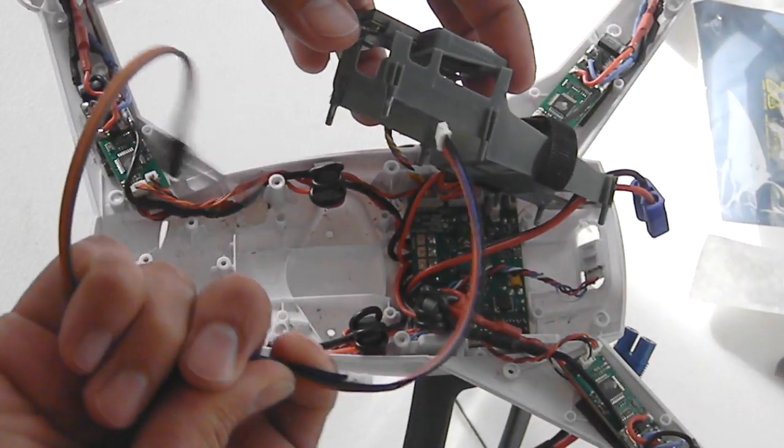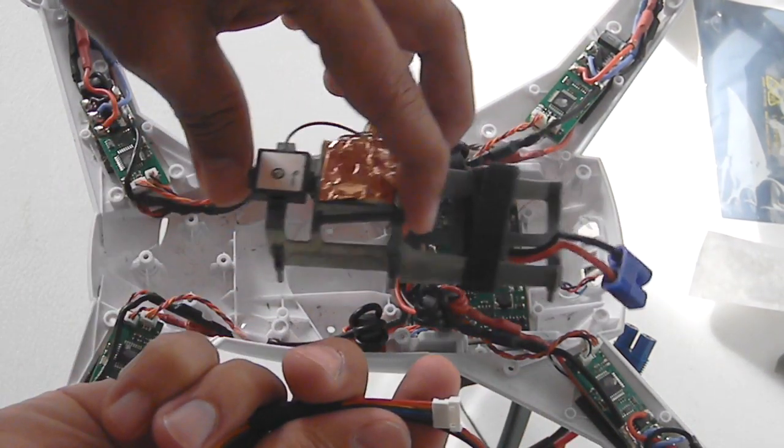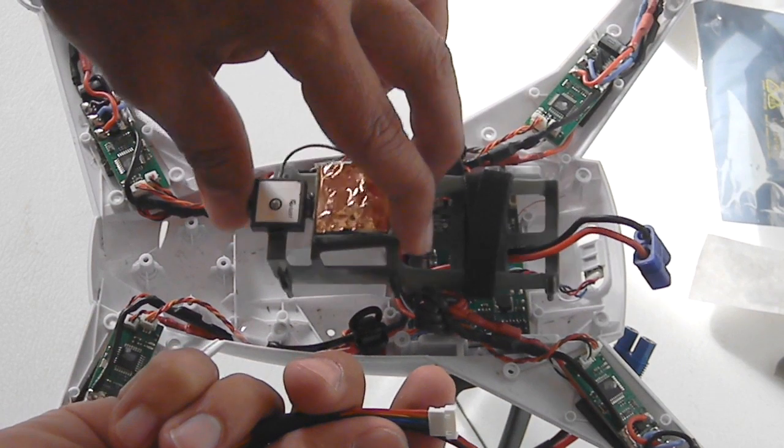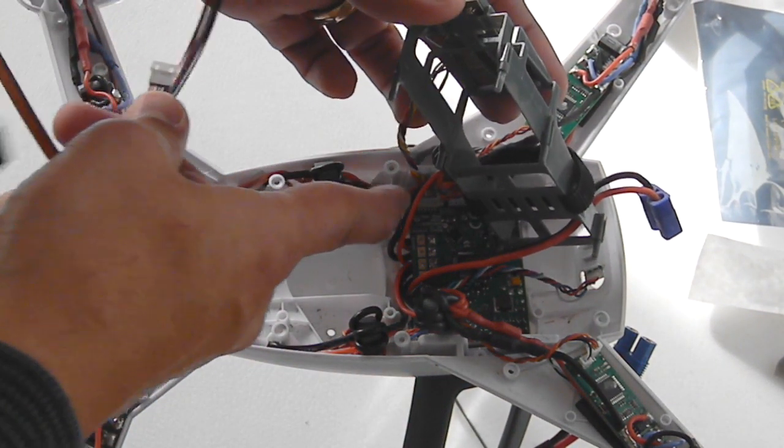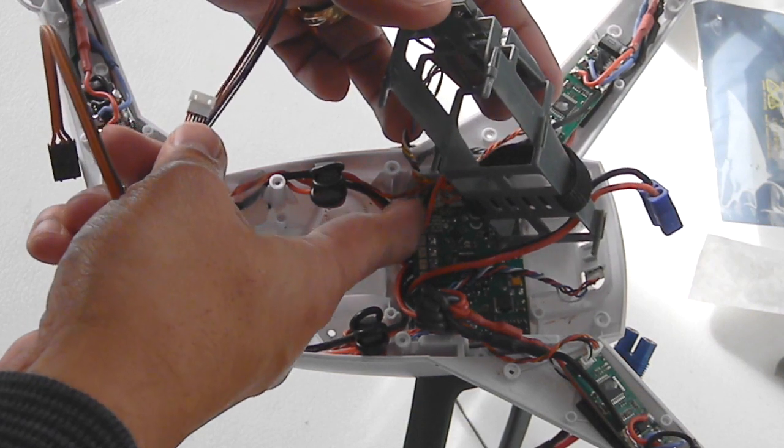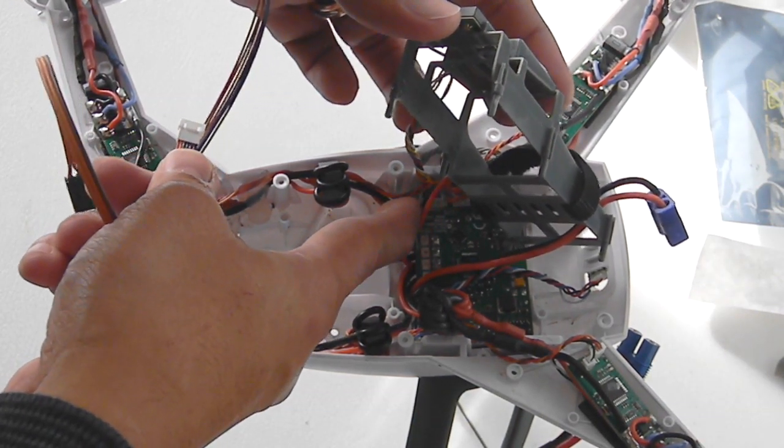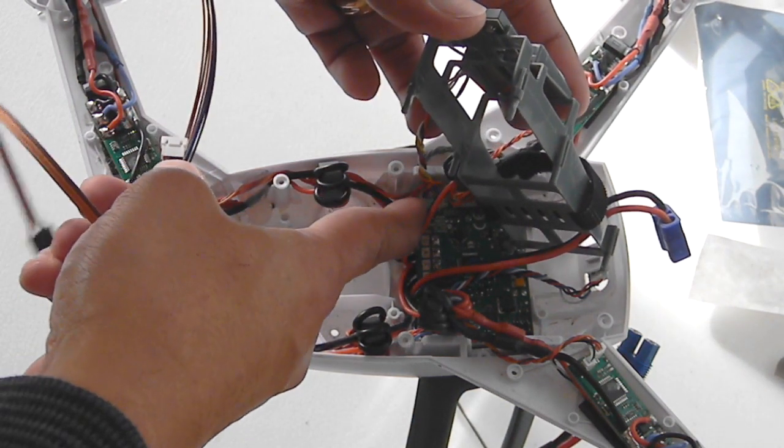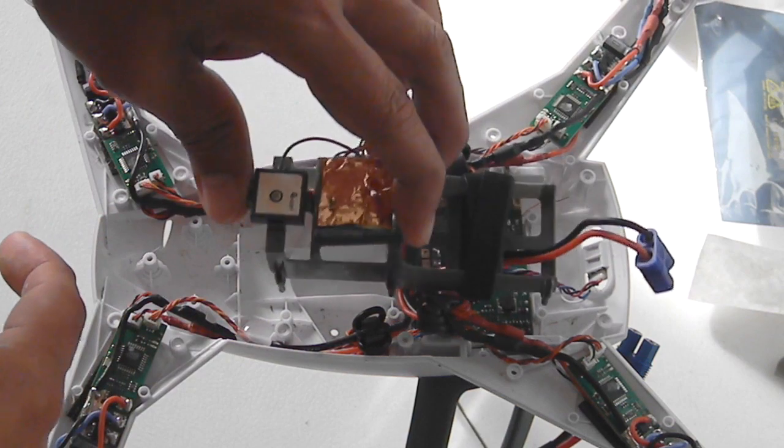We're replacing that and bypassing it with this cable so that we could attach the Flytrex module onto this. It's a pretty tight fit, but it's doable. We just have to be careful about removing that connection from the motherboard. So that's the next step.